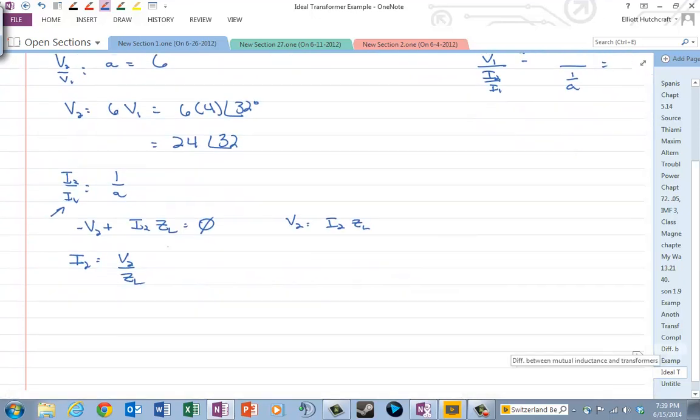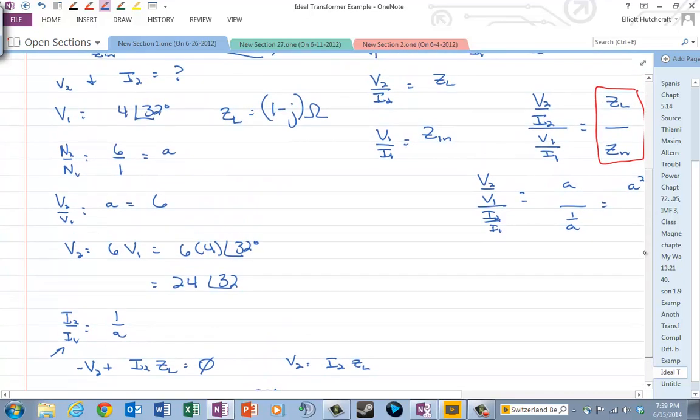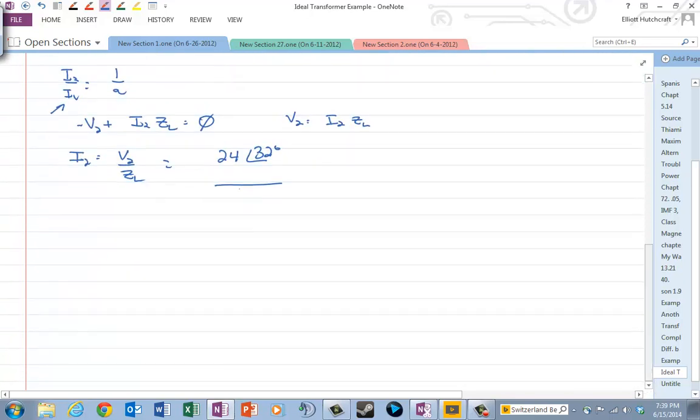So that means we have V2, which is 24 angle 32 degrees, divided by ZL, which we have is 1 minus J. And so if I look at that, then calculate everything I'll get in real and imaginary components 3.82 plus 16.5 J. And then I can convert that to polar form and that's 17 angle 77 degrees.